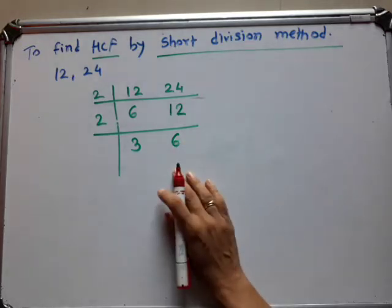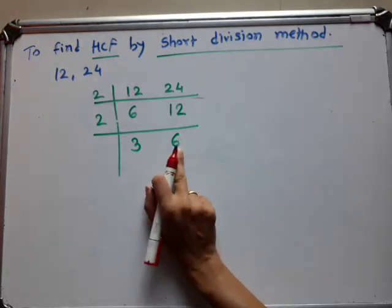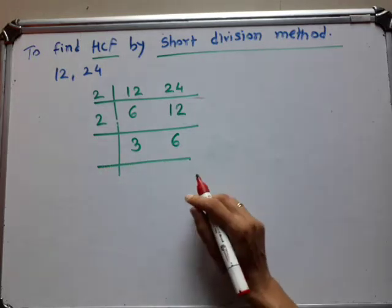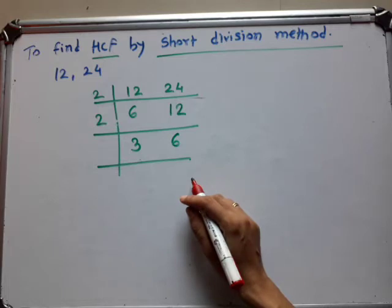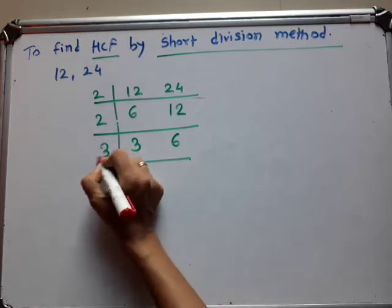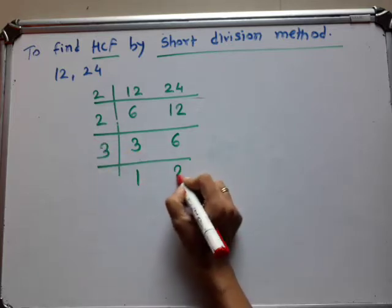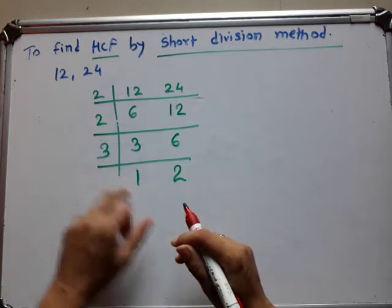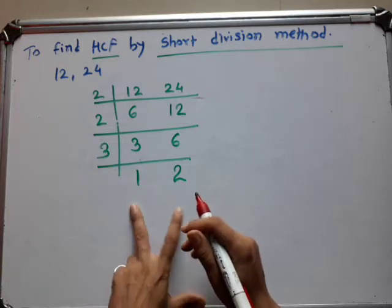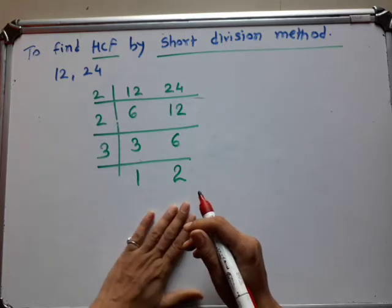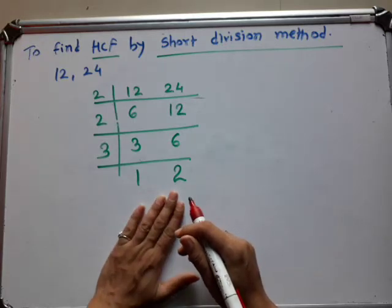Now see here — one is an even number and one is an odd number. Here you have to take the next prime number, that is 3. 3 is again a prime number. Both numbers come in the table of 3. So 3 times 1 are 3, and 3 times 2 are 6. So here we get the numbers 1 and 2, and 1 and 2 will not come in any table. So you have to stop here.